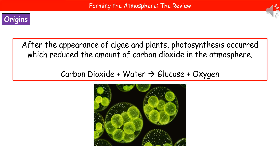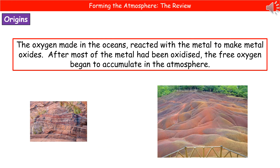Photosynthesis is carbon dioxide plus water making glucose and oxygen. So when those plants and algae were making the oxygen, what happened was it reacted with the metal that was present to make metal oxides. Then after most of the metal had been oxidized, we had this excess of oxygen — this free oxygen — that then began to accumulate in the atmosphere.